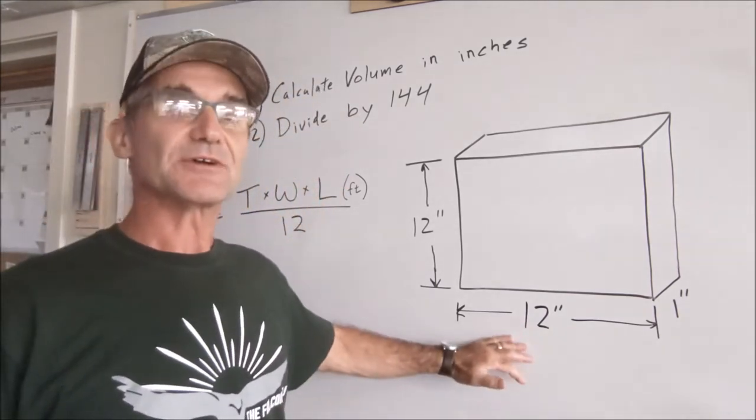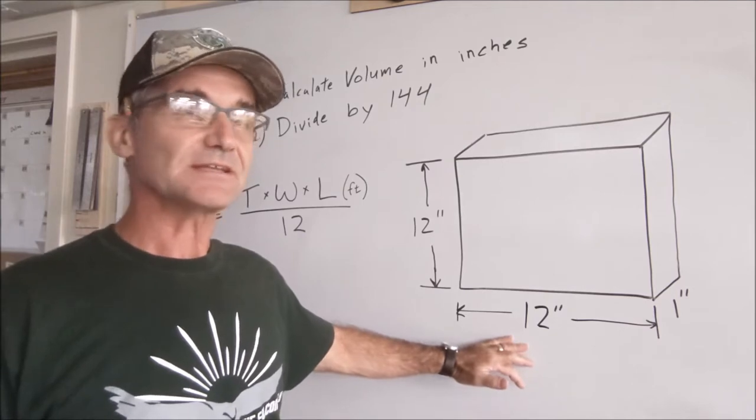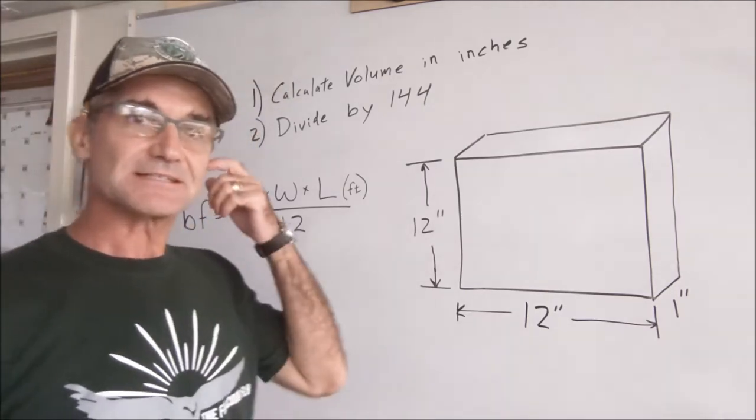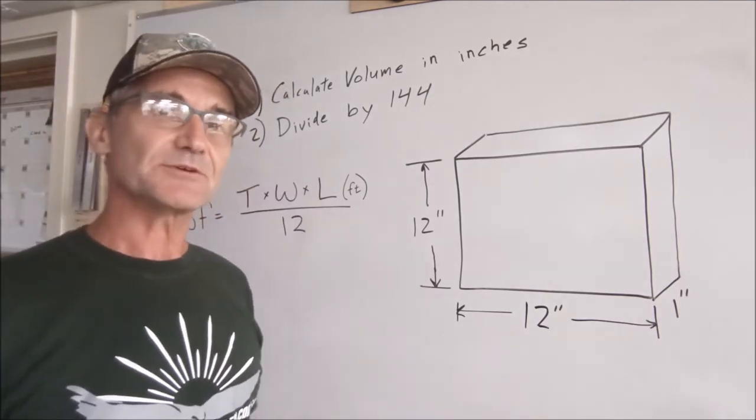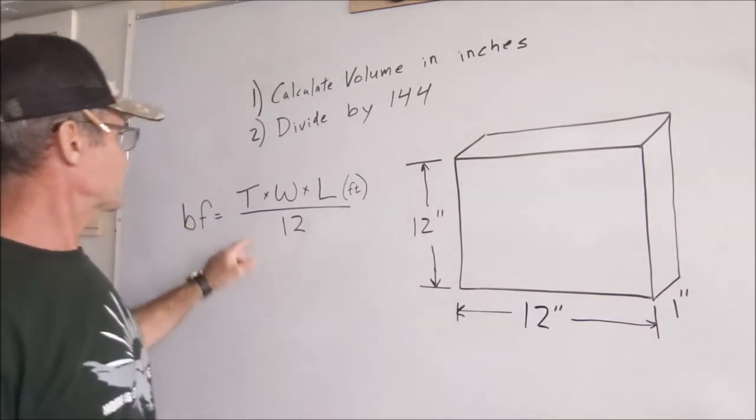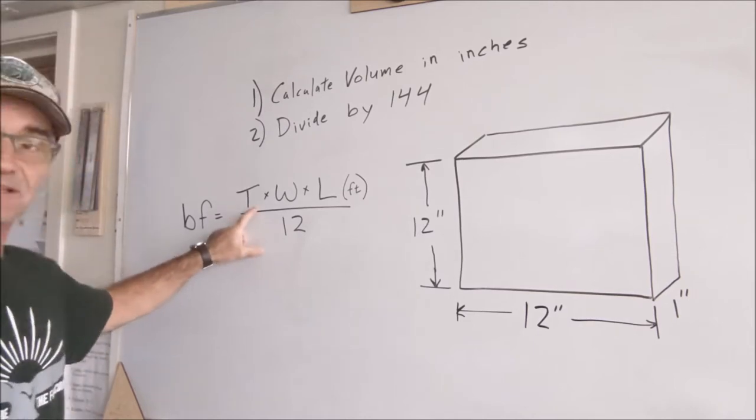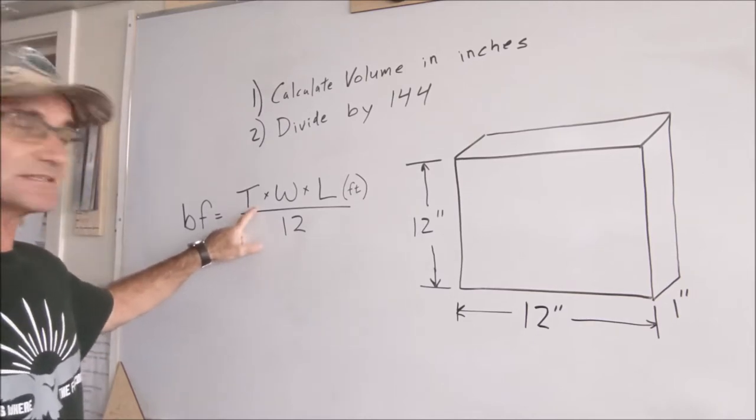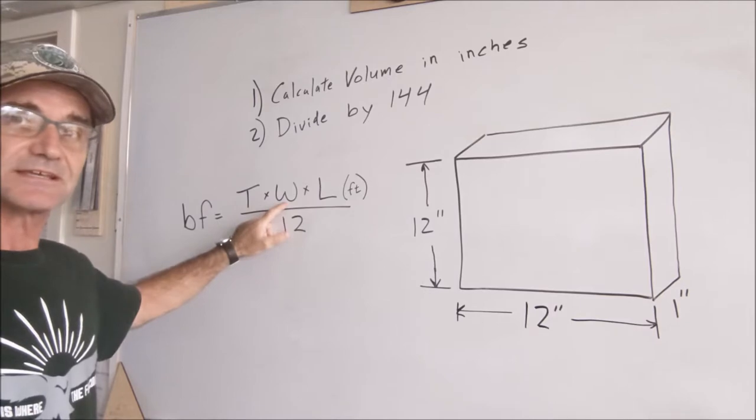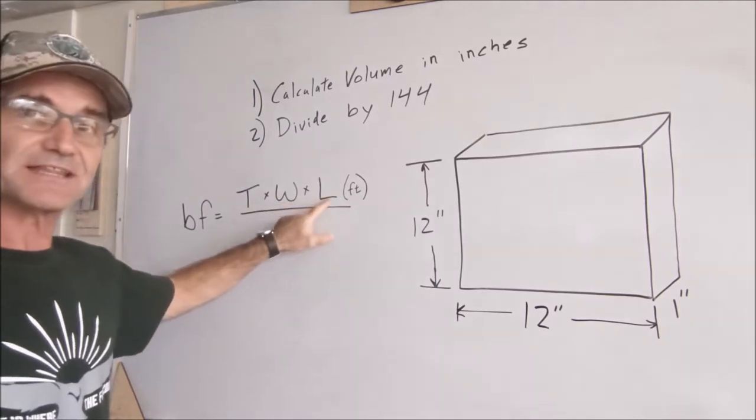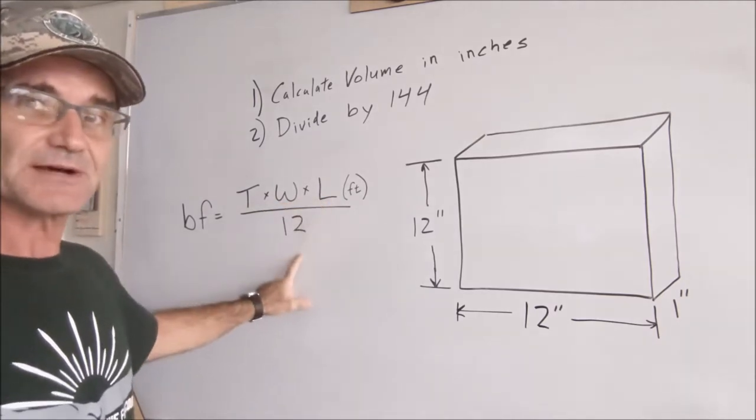Okay, so that's basically the overall idea on calculating board feet. There's another equation that might be a little bit easier if you're working with the length in feet. Another equation right here, board feet is equal to the thickness in inches times the width in inches times the length in feet divided by twelve.